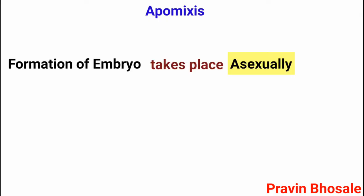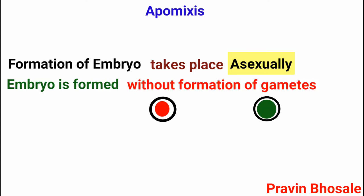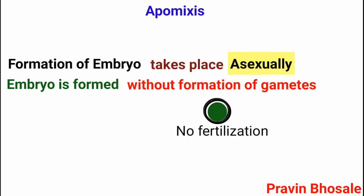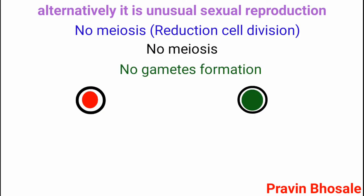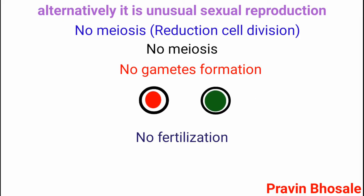In apomixis, formation of embryo takes place asexually — embryo is formed without formation of gametes, meaning there is no fertilization. Alternatively, it is unusual sexual reproduction where there is no meiosis. No meiosis means no gamete formation, and no gamete formation means no fertilization.